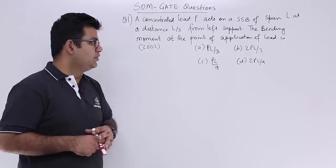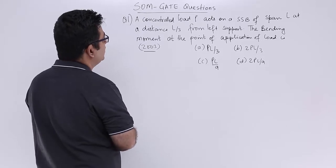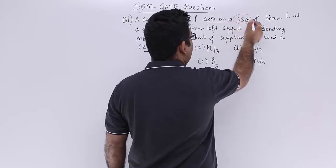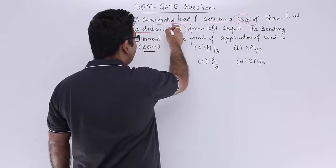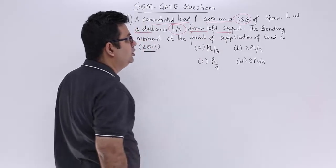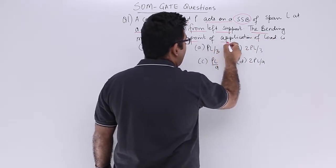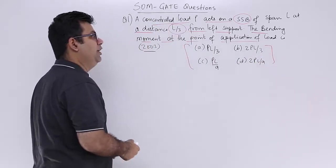The very first question is from GATE 2003 which says a concentrated load P acts on a simply supported beam of span L at a distance L by 3 from the left support. The bending moment at the point of application of load is, you need to check one of the four options.